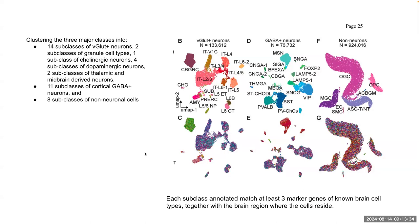I was curious about how they made the annotations. Each subclass within the three major classes was annotated by matching at least three marker genes of known brain cell types, together with the brain region where the cells reside. This was the strategy used to make the subclass annotations.